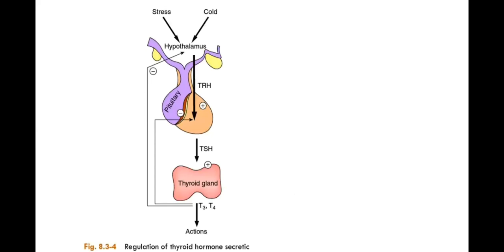What is the regulation? We learn about the HPT axis — the Hypothalamo-Pituitary-Thyroid axis. The hypothalamus secretes releasing hormones that act on the anterior pituitary, which then acts on the thyroid gland to produce hormonal actions.